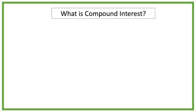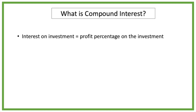Before we go to compound interest we need to know what interest on an investment is. Interest is the profit percentage on your investment. Let's say you invest 100 dollar and the interest on your investment is 5 percent.